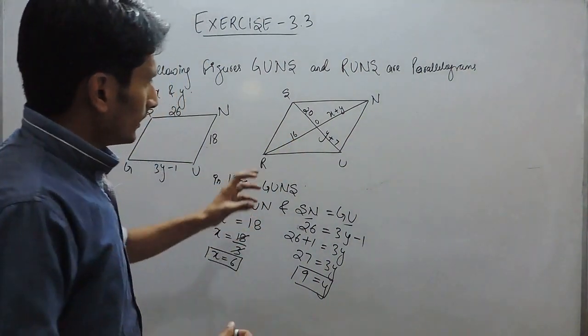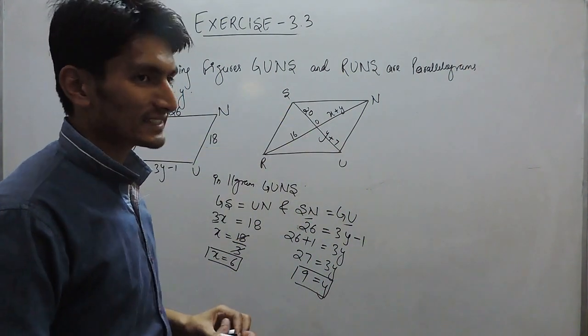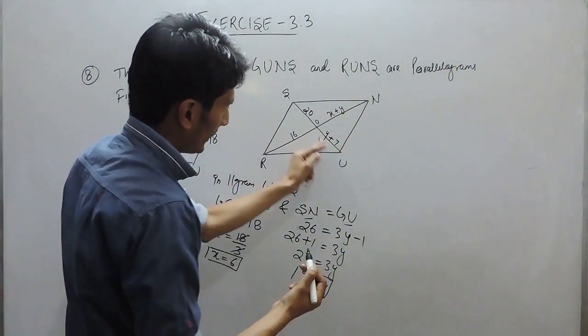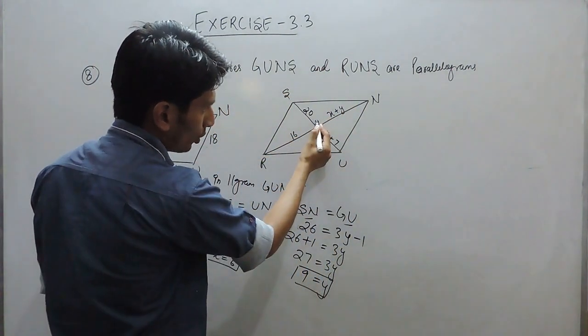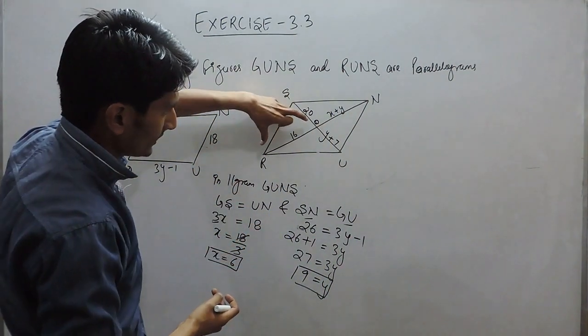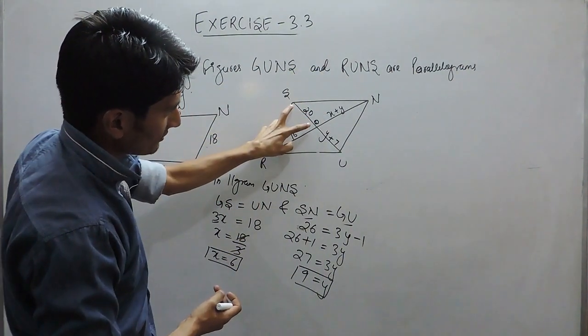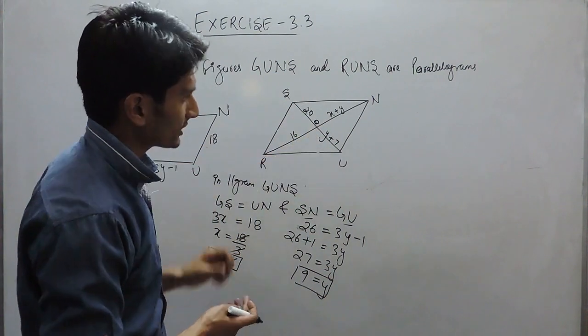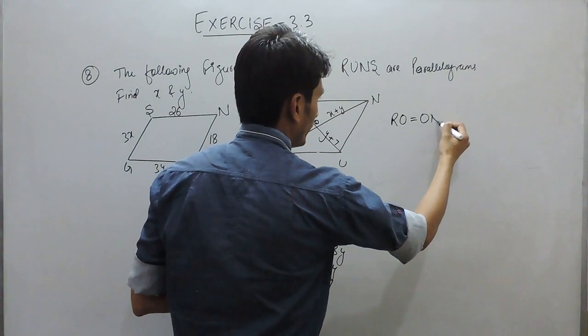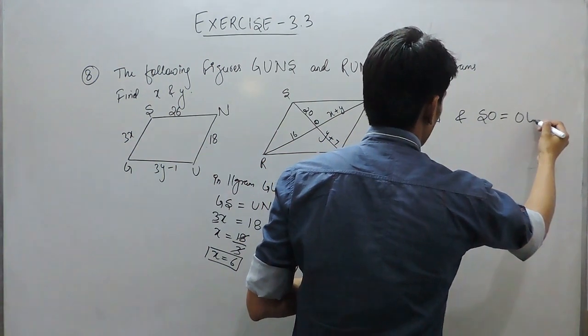In this parallelogram, the diagonals of a parallelogram bisect each other. Means, if this diagonal and this diagonal are intersecting at point O, these two diagonals must bisect each other. Means, the value of this and this must be equal. Same case with this and this must be equal. So, the value of this.